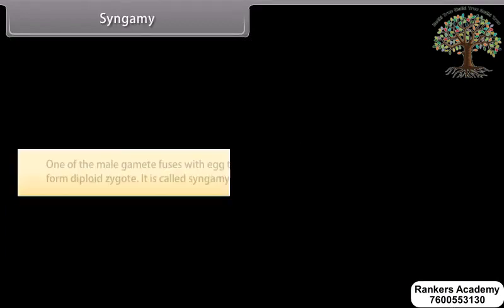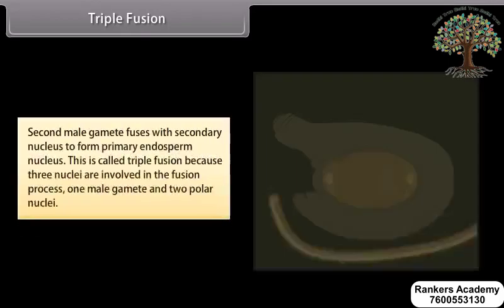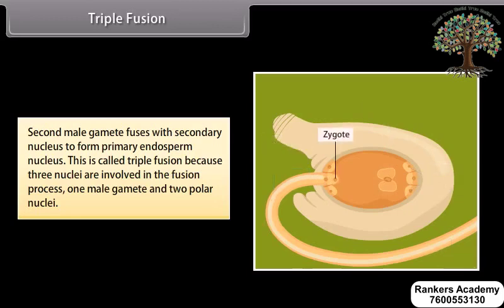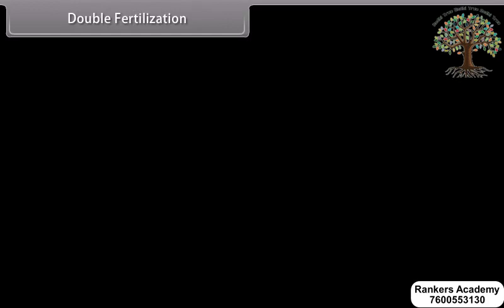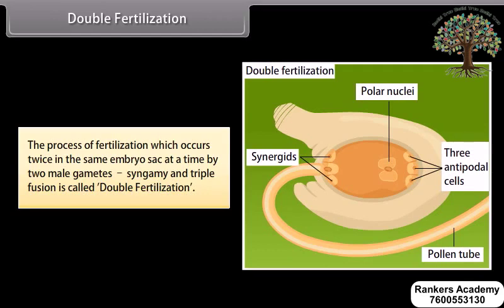Syngamy: One of the male gametes fuses with the egg to form a diploid zygote; this is called syngamy. Triple fusion: The second male gamete fuses with the secondary nucleus to form the primary endosperm nucleus. This is called triple fusion because three nuclei are involved in the fusion process — one male gamete and two polar nuclei. Double fertilization: The process of fertilization which occurs twice in the same embryo sac at a time by two male gametes — syngamy and triple fusion — is called double fertilization.